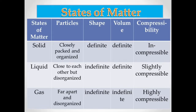For shape, solid has a definite shape — it could be a square or a rectangle. It also has a definite volume, like the volume of a cube or a chair. In terms of compressibility, since the particles are closely packed and organized, solids are incompressible. If you try to compress a metal or a wooden door, it's very difficult.